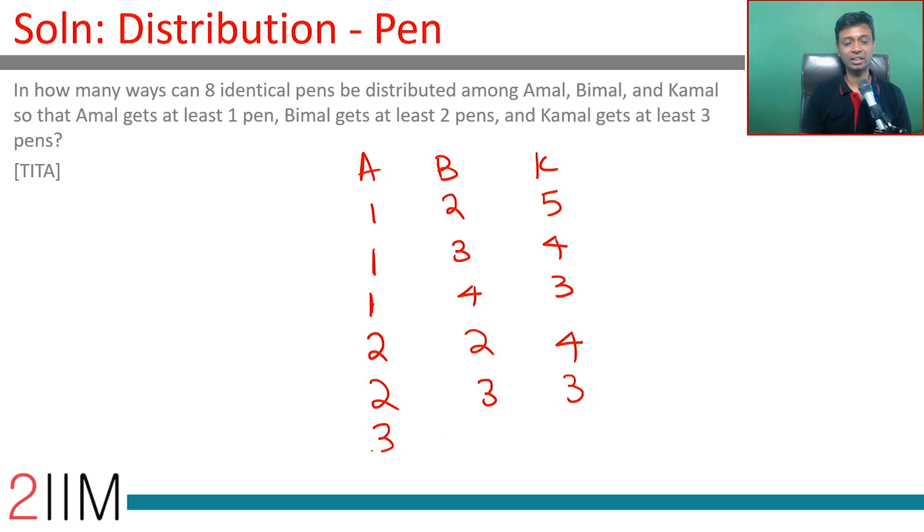Amal having 3, Bimal having 2, 3 plus 2 is 5, 5 plus 3 is 8. With 3, that's the only possibility. With Amal gets 4, then Bimal 2 and Kamal 3, that's not possible.